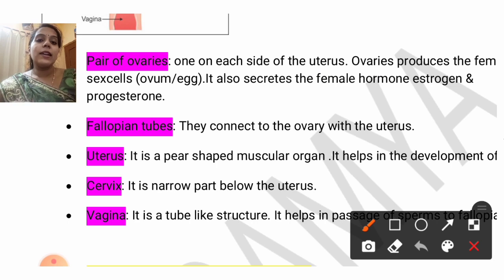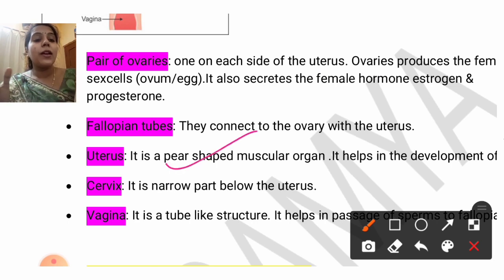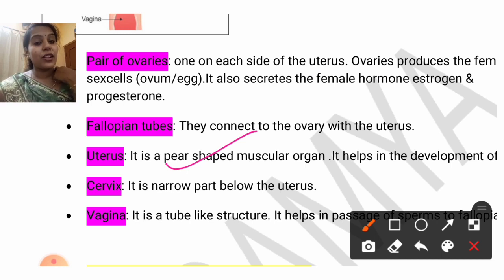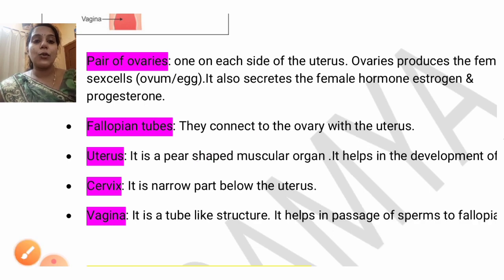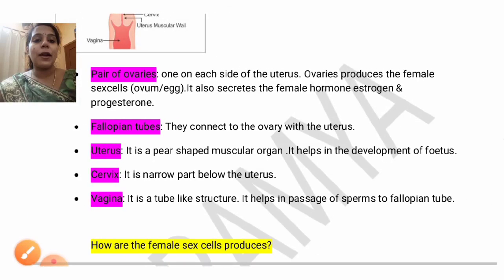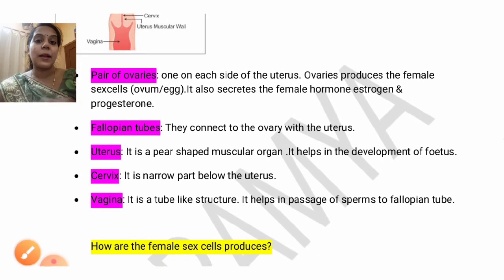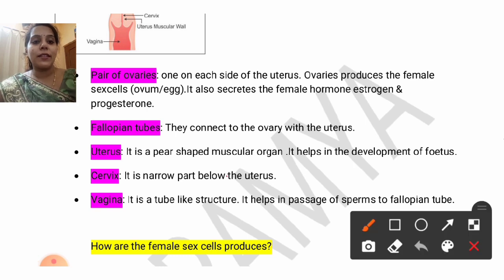You also have to know about the uterus. It is actually a pear-shaped muscular organ — a bag-like structure. It helps in the development of the embryo, providing everything the future developing embryo needs. You also have to know about the cervix.